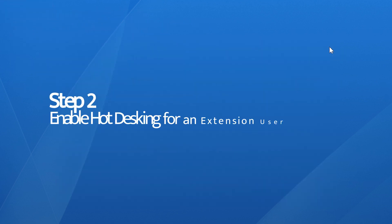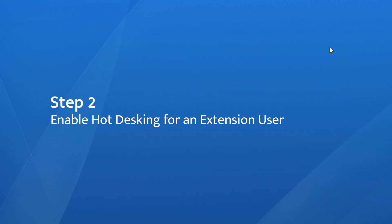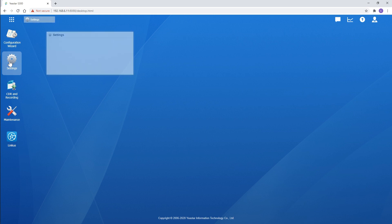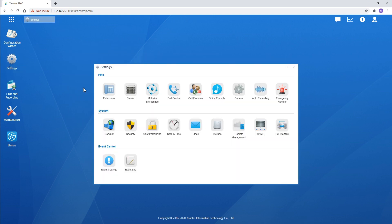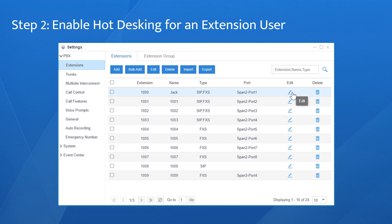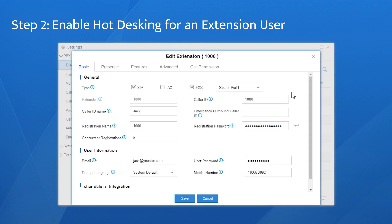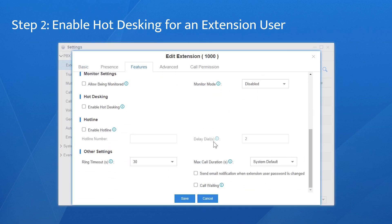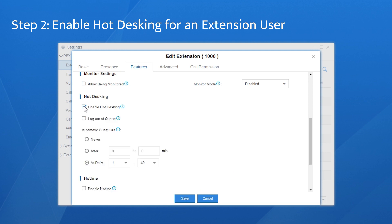Next, enable Hot Desking for an extension user. Go to the extension settings page. Say we choose extension 1000. Click on Edit, choose Features, and check to enable Hot Desking. That's it.